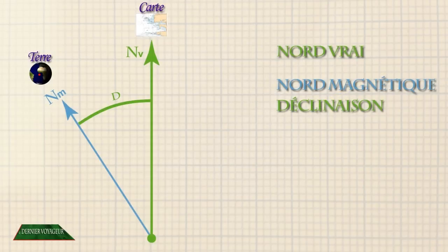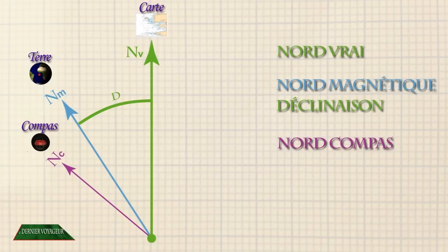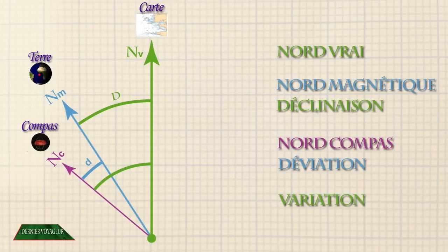Le nord indiqué par le compas de route est le nord-compas, noté grand N petit C. Et nous écrivons petit D la déviation. Enfin, la relation entre le nord-vrai et le nord-compas s'appelle la variation. Nous l'écrivons grand W.